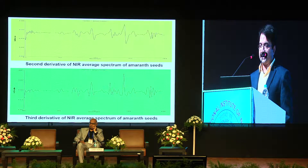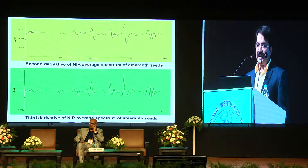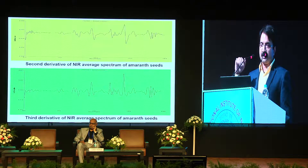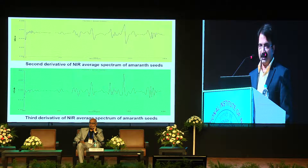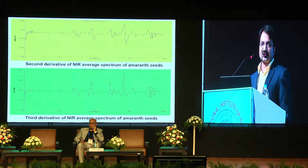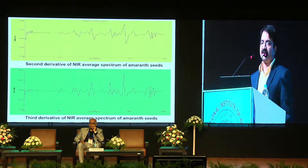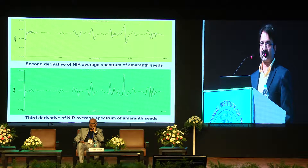The raw spectra have very broad, sloppy peaks, but if you go to the second or third derivative, the peaks become sharp and the data becomes usable. This spectral data is then trained against the wet chemistry data of the same sample from which the spectral data was collected.